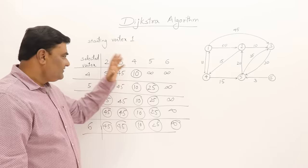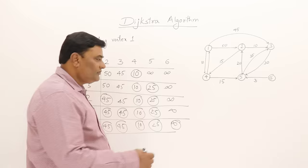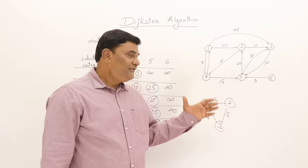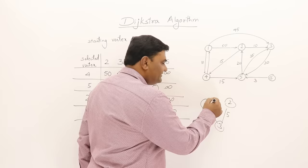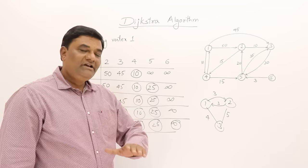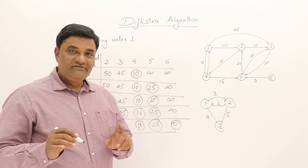Dijkstra's algorithm can also work on a non-directed graph. If you are not comfortable with non-directed edges, you can convert them into directed edges by adding parallel edges in both directions — for example this edge of cost 3 becomes two directed edges each with cost 3. Now it becomes a directed graph, so Dijkstra can work on both directed as well as non-directed graphs.